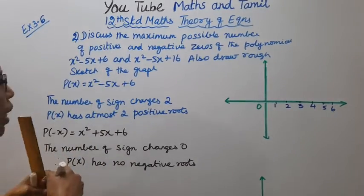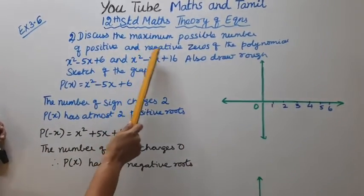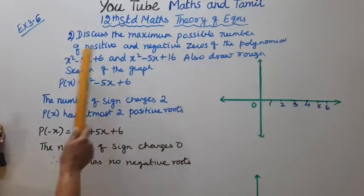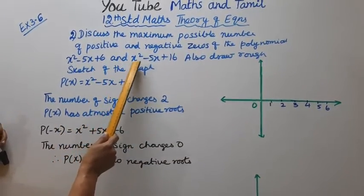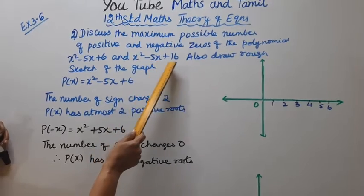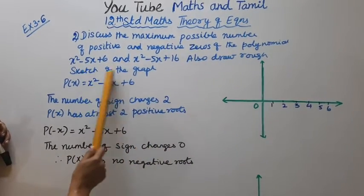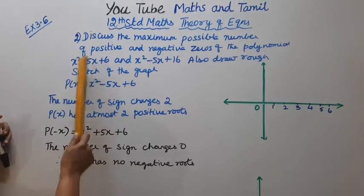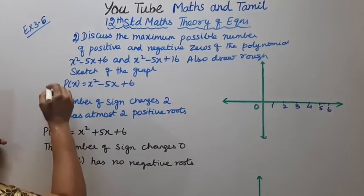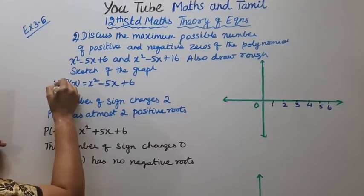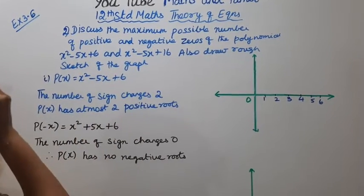Discuss the maximum possible number of positive and negative zeros of the polynomial x² - 5x + 6 and x² - 5x + 16. Also draw a rough sketch of the graph. P(x) — this is the first one: x² - 5x + 6.